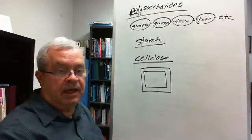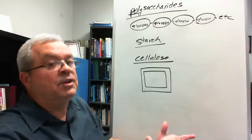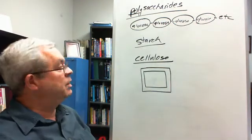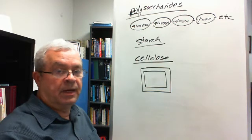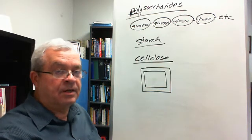A plant cell is different than an animal cell. When you look at a plant cell through a microscope, most of the time they look like little boxes.